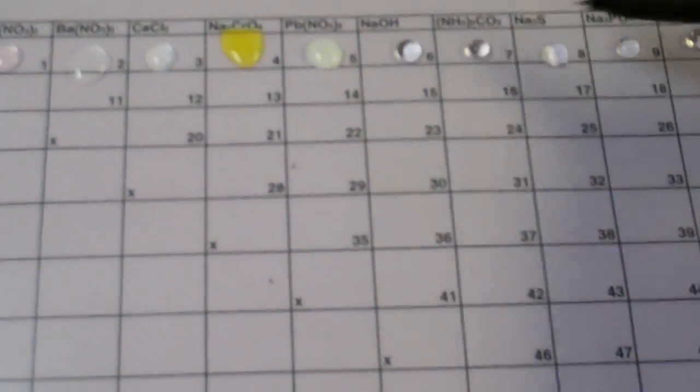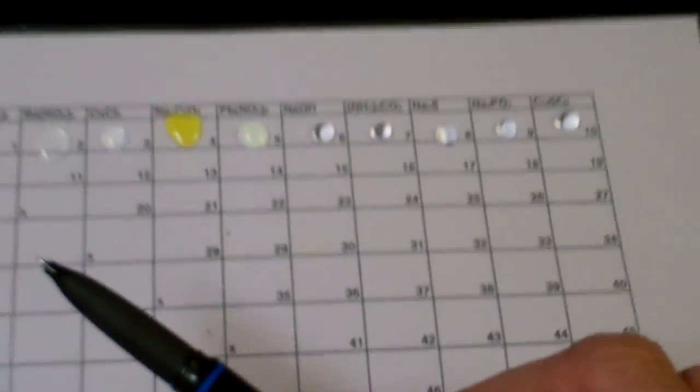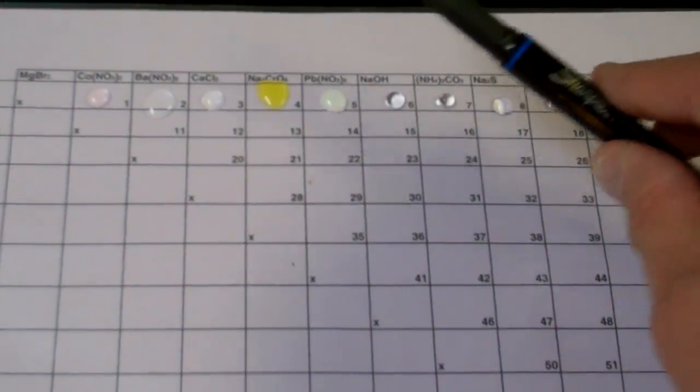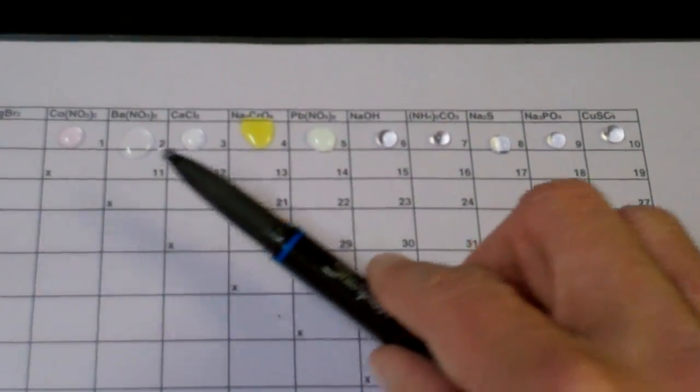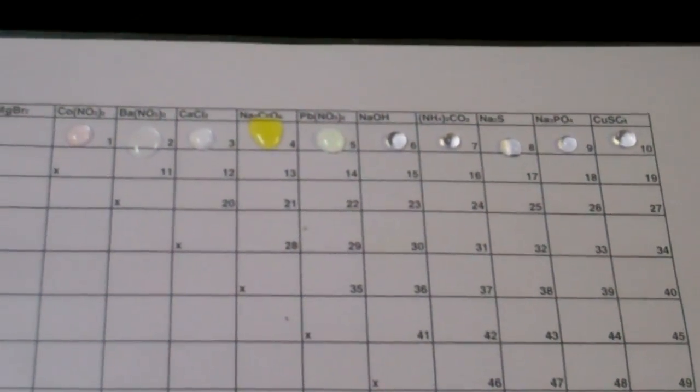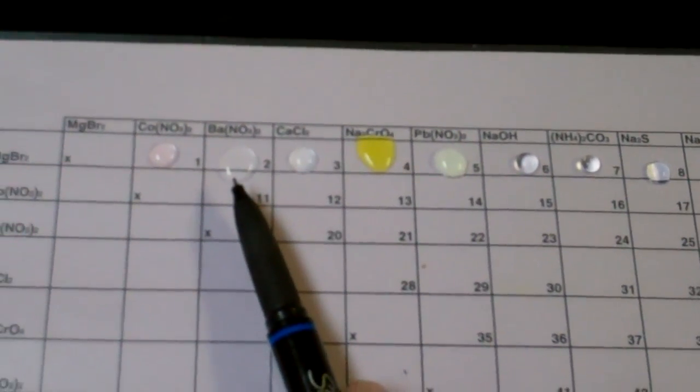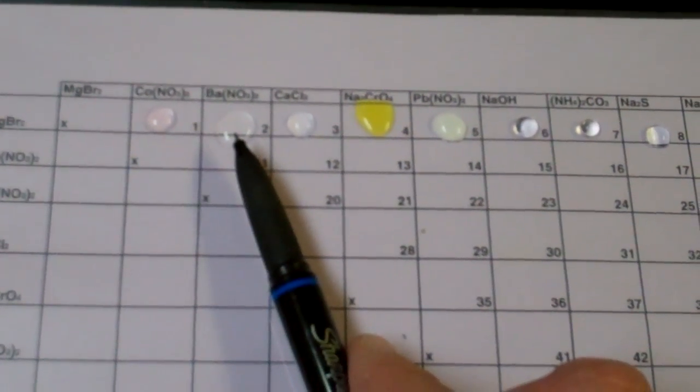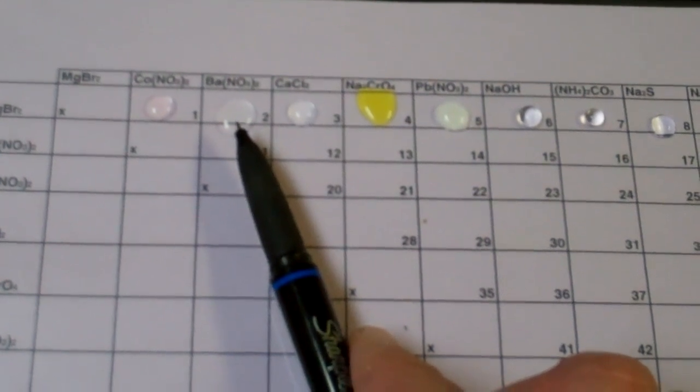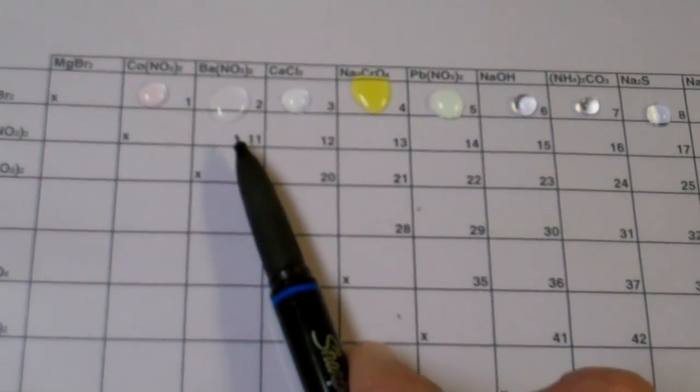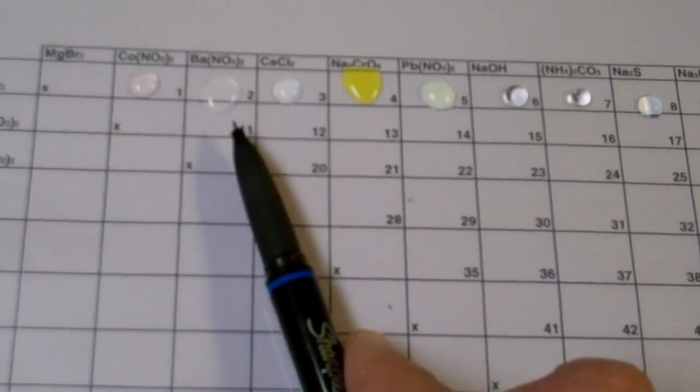Now, we'll continue that process until this entire sheet has been filled up with drops. If you make a mistake or one drop spills into another area, you can get a Kleenex out after that's been finished, and that will absorb that droplet, so it won't interfere with your next reaction.